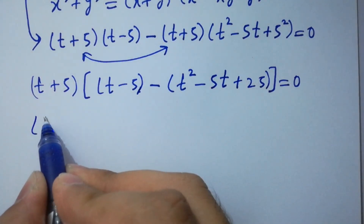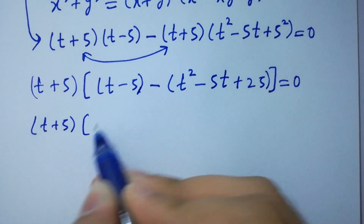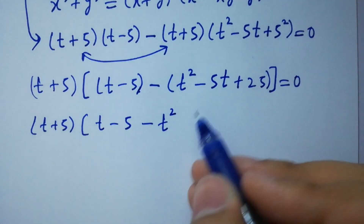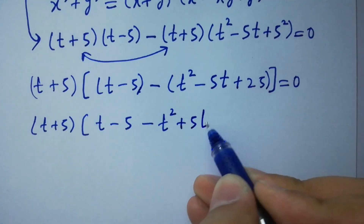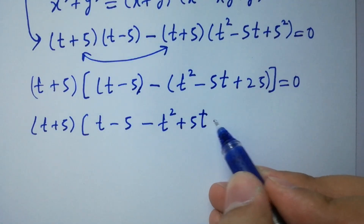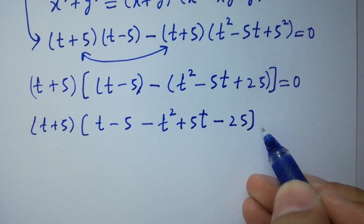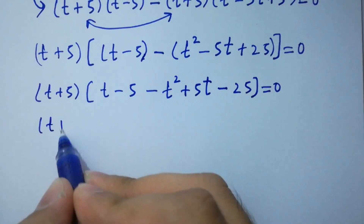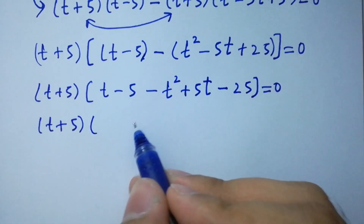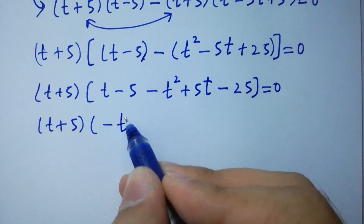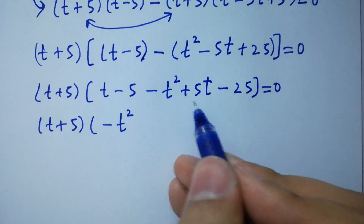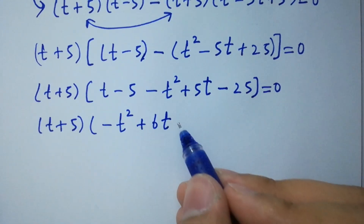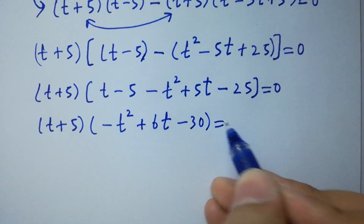Simplifying inside the bracket: (t plus 5) times (t minus 5 minus t squared plus 5t minus 25) equals 0. Further simplifying: (t plus 5) times (minus t squared plus 6t minus 30) equals 0.